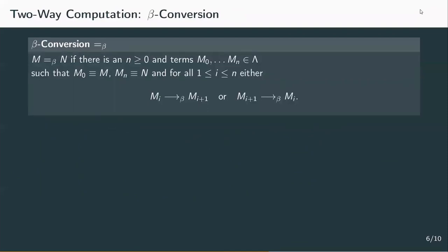A lambda term m is beta convertible to a lambda term n if there's a chain of reductions starting in m and ending in n, but this time the reductions can go left or right. For example, starting with lambda term m, m is one-step reducible to m1, and then going the other way, a term m2 which is beta reducible to m1. So here the beta reduction doesn't go left to right as in many-step reduction, but right to left. Additionally, m2 is also reducible to another term m3, which is the term n that we wanted to reach. So every reduction chain is also a conversion chain, but not the other way around.